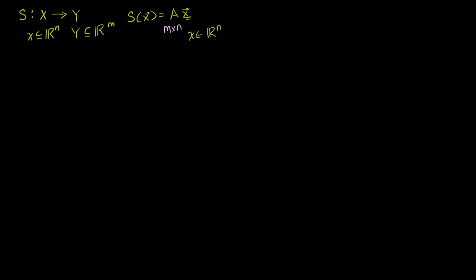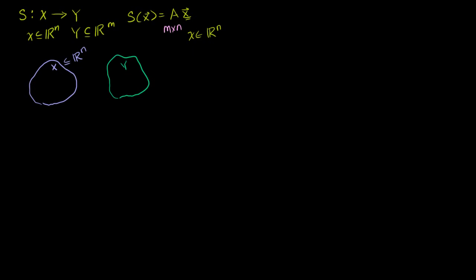Let me draw what I've done so far. We have some set X, which is a subset of Rn. We have this linear transformation S mapping from X to a new set Y, which is a subset of Rm. You take some element in X, apply transformation S, and get a value in set Y. Matrix A is m by n because you start with a vector in Rn and end up with a vector in Rm.